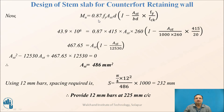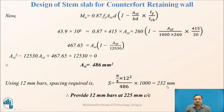Using clause G1.1B of IS456 to find the area of steel required: MU = 0.87 × fy × AST × d × [1 − (AST × fy)/(b × d × fck)]. Substituting MU = 43.9 × 10⁶ N·mm, fy = 415, b = 1000, d = 260, and solving the quadratic equation gives AST = 486 mm². Providing 12 mm diameter bars, spacing required = (area of 1 bar × 1000) / 486 = 232 mm. Therefore, provide 12 mm diameter bars at 225 mm c/c up to 1.5 m from the base, and then increase the spacing above that.